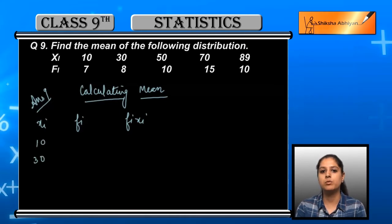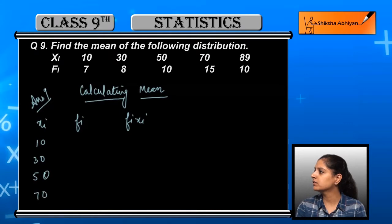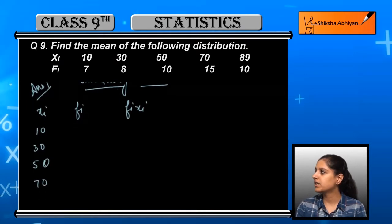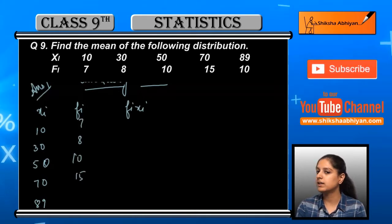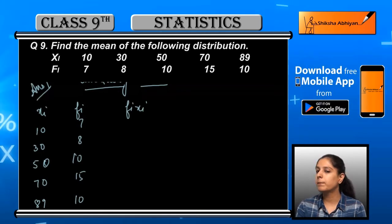According to the table, you have X given as 10, 30, 50, 70, and 89. The frequencies are: 10 has frequency 7, 30 has 8, 50 has 10, 70 has 15, and 89 has 10. F_i × X_i means multiplication.